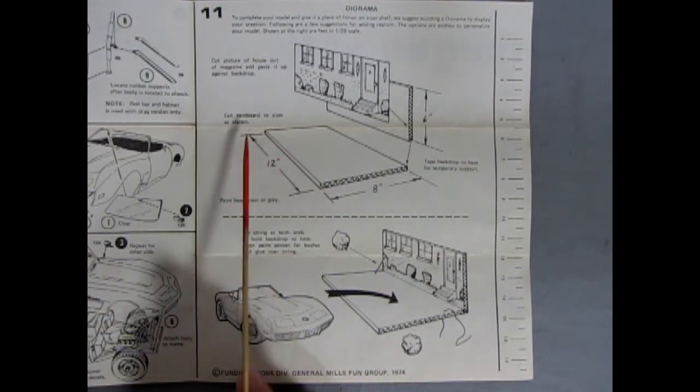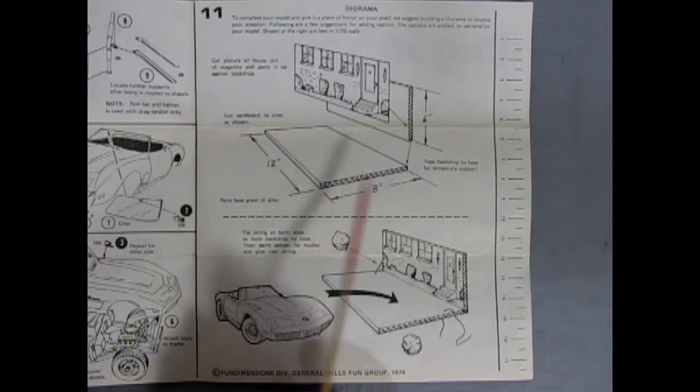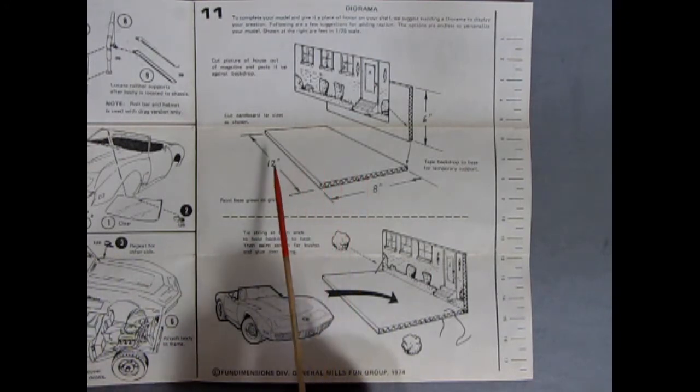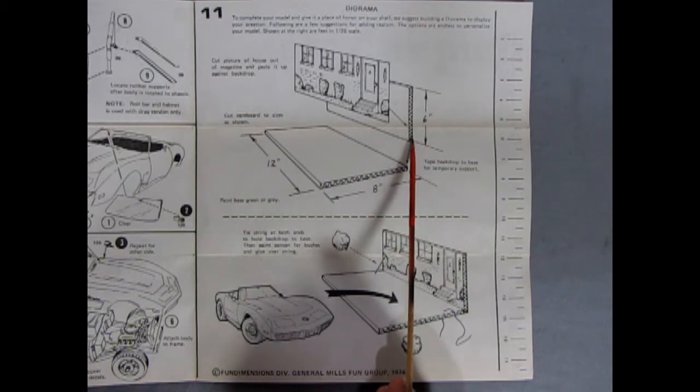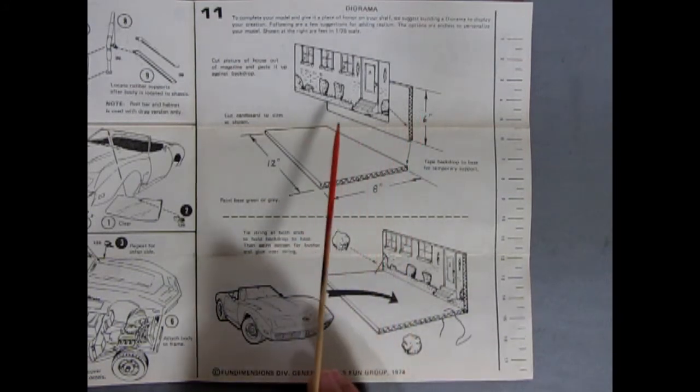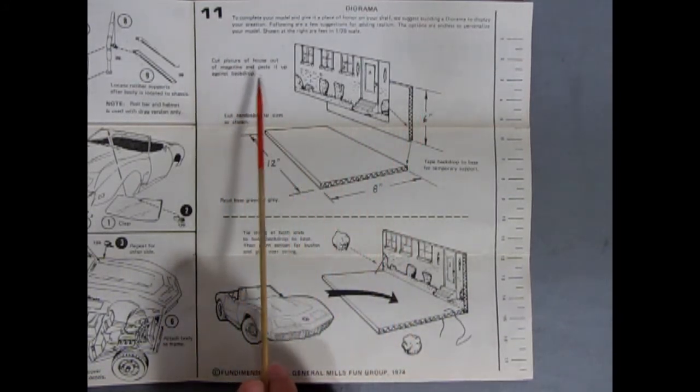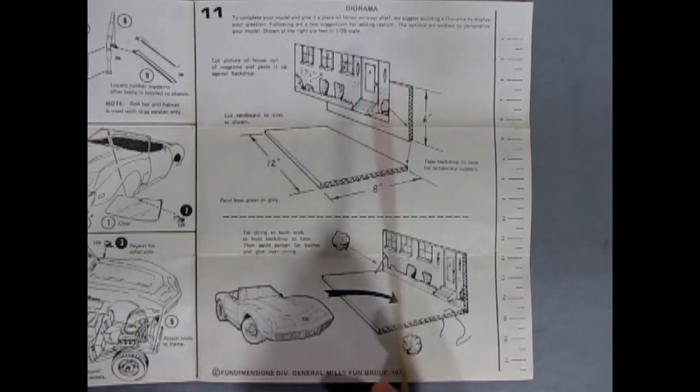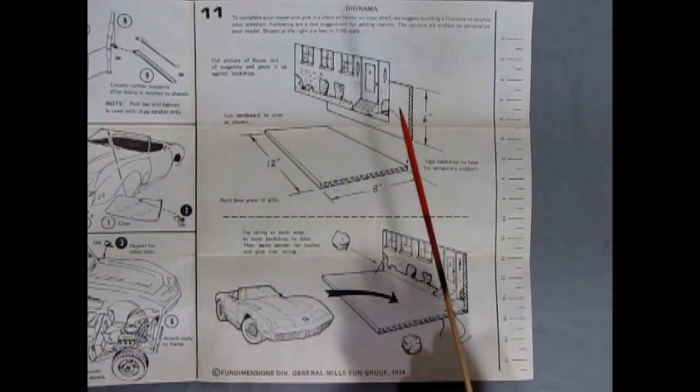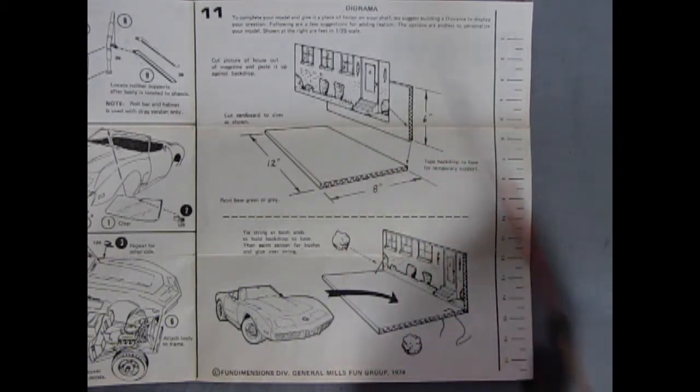It says to cut the cardboard sides as shown, so you'd get corrugated cardboard, but now you could use foam core board, which is a lot more rigid and I think it's better. So you cut one 12 inches long by 8 inches deep and then 6 inches high in the back again by 12 inches long. It says to cut a picture of a house out of a magazine and paste it up against the backdrop. Now you want to make sure it's in scale to the car though, which they don't... well they do give you some scale here, so you can try to figure it out.